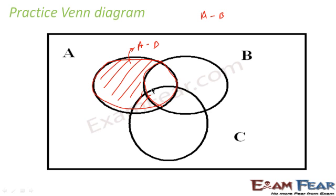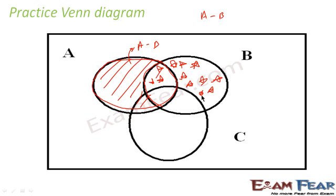Similarly, if you want B minus C, you take the whole element of B, subtract the common area between B and C. So what you get — marked with a star — is B minus C.